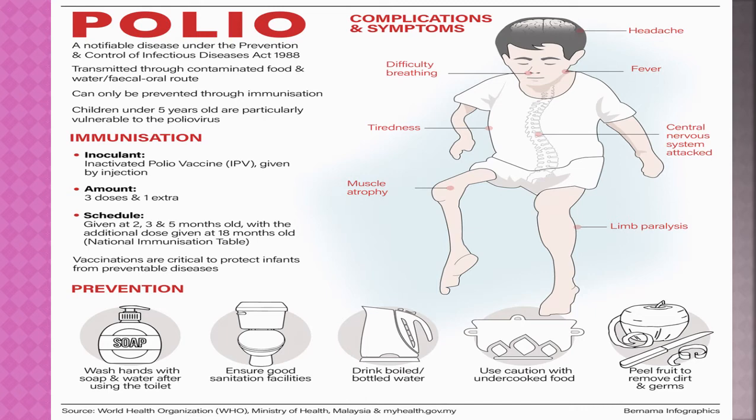Complications of polio include muscle atrophy — where muscles are wasted — limb paralysis, central nervous system attack, and difficulty in breathing and headache. The virus is transmitted through contaminated food and water. Prevention includes washing hands, maintaining sanitation, boiling drinking water, being cautious with undercooked food, and peeling fruit to remove dirt and germs. But the most important prevention is immunization or vaccination of children.